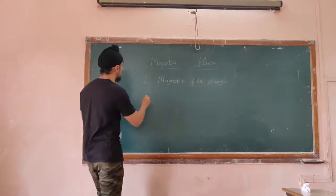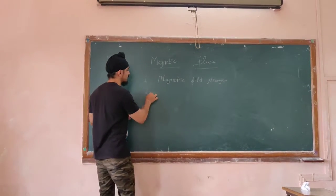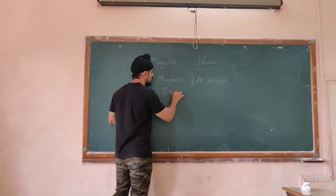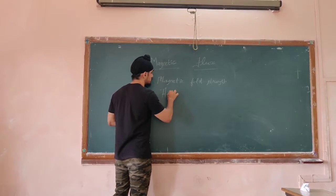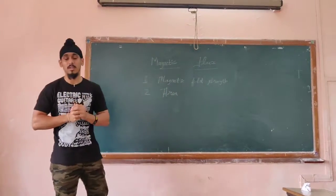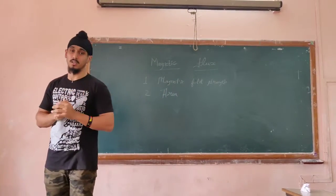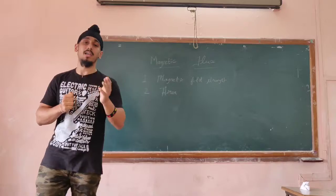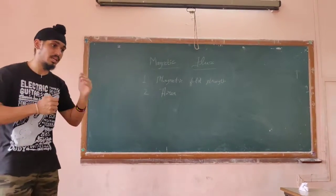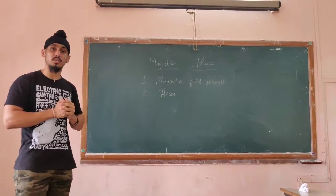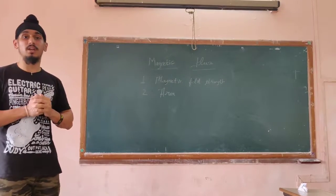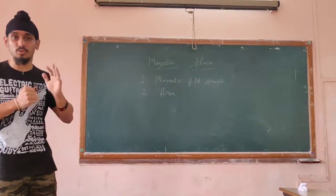The second thing I am going to discuss is about the area — the area of a conductor. Magnetic field lines are going to pass through the area. Larger the area of a conductor, more will be the field lines passing through it.